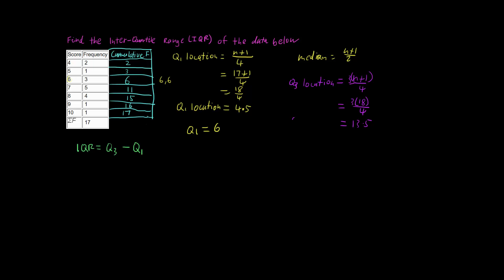So our Q3 is located at our 13 and a half data point. So we have our 11th data point is a 7, and our 12th up to our 15th data point is an 8. So we're going to have somewhere between 8 and 8, which is 8, so our Q3 is 8.